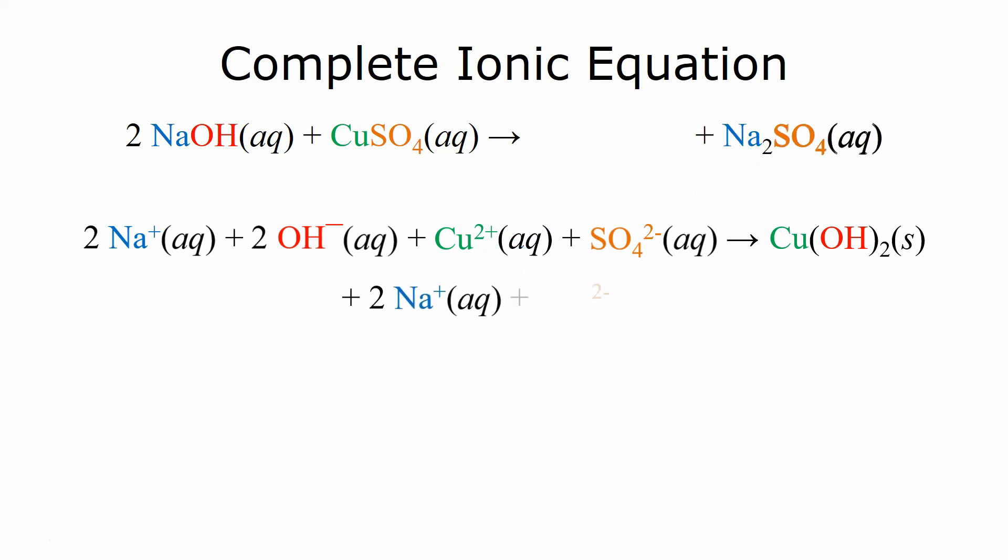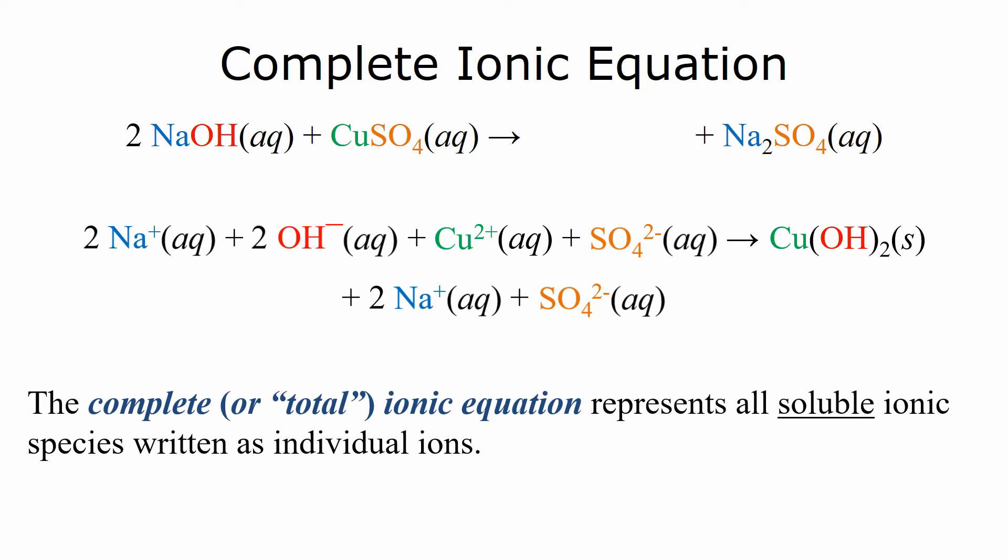And that leaves us with two sodium ions and a sulfate ion on the product side. This is what's known as the complete or total ionic equation, and we're going to represent all the soluble species written as individual ions with their states of matter.